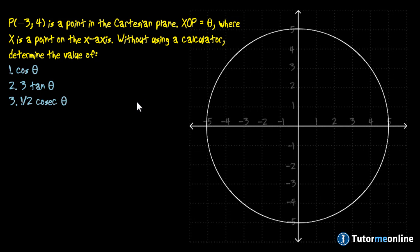So let's have a look at the different steps that we need to take. The first thing you need to do is plot the point P on your Cartesian plane. So that would be at the x-coordinate minus 3 and the y-coordinate 4. That is point P minus 3 and 4.